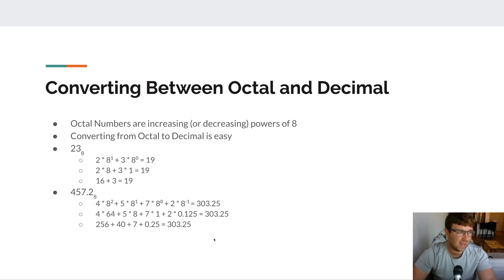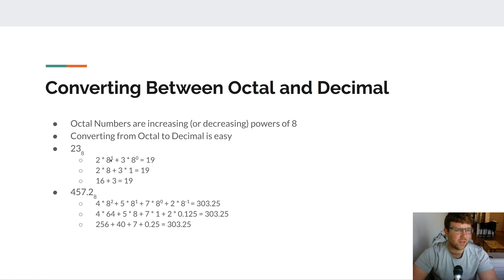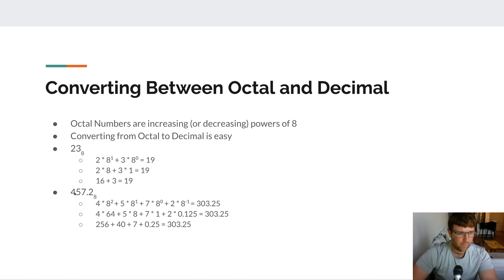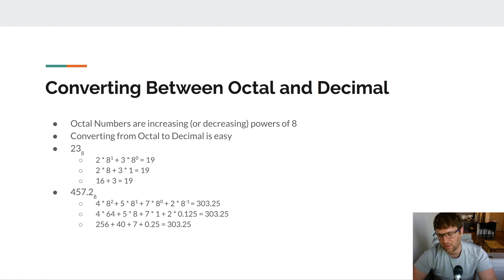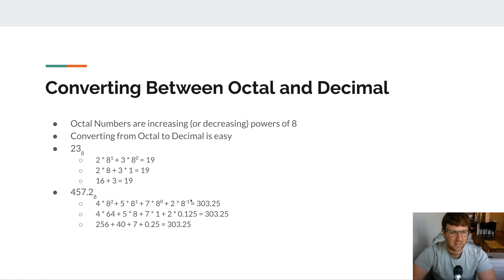Octal numbers use increasing or decreasing powers of 8. For example, 23 in octal equals 2 times 8¹ plus 3 times 8⁰, which is 2 times 8 plus 3 times 1, or 16 plus 3 = 19 in decimal. For fractional portions, digits to the right of the decimal point use decreasing powers of 8. So 457.2 in octal is 4 times 8² plus 5 times 8¹ plus 7 times 8⁰ plus 2 times 8⁻¹.